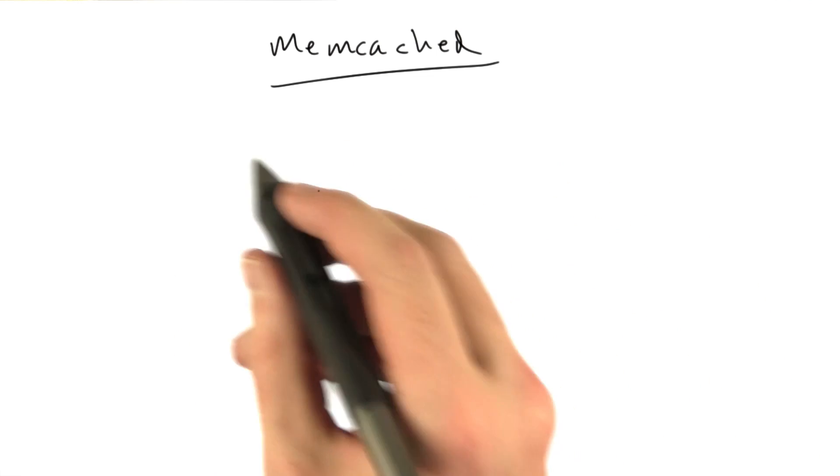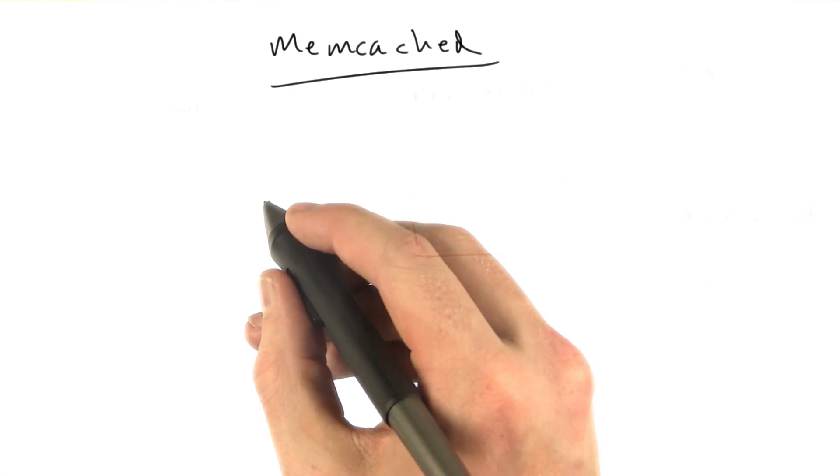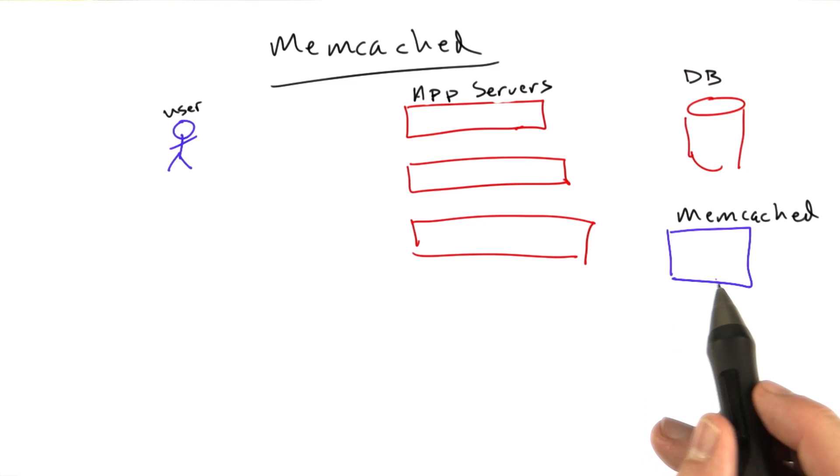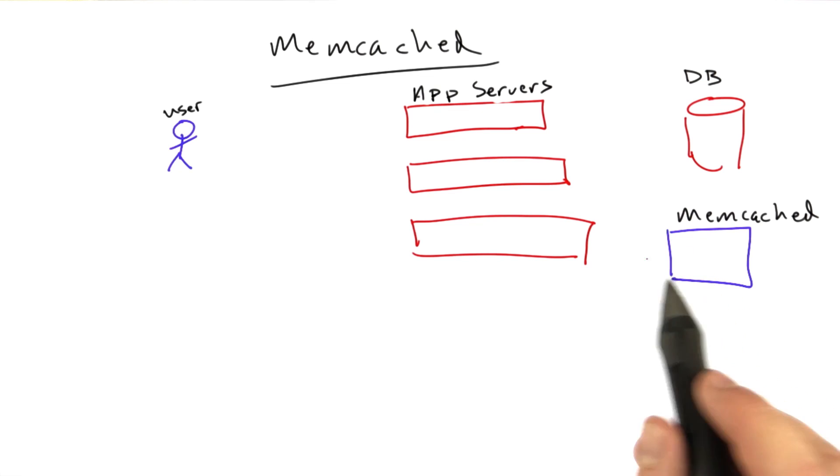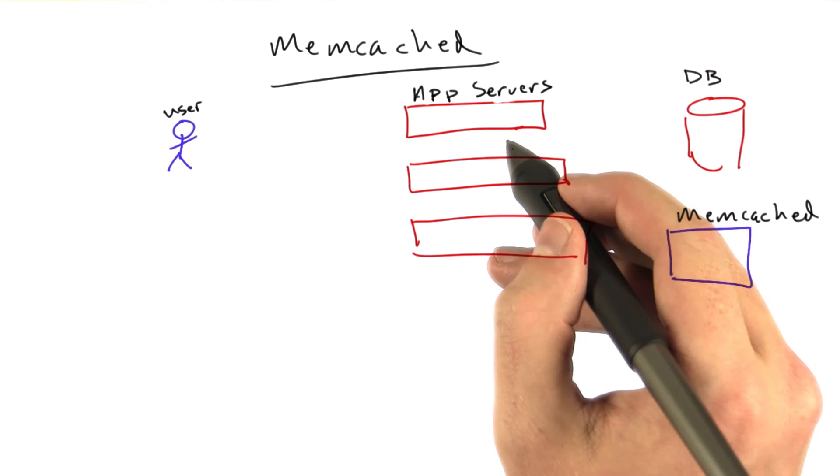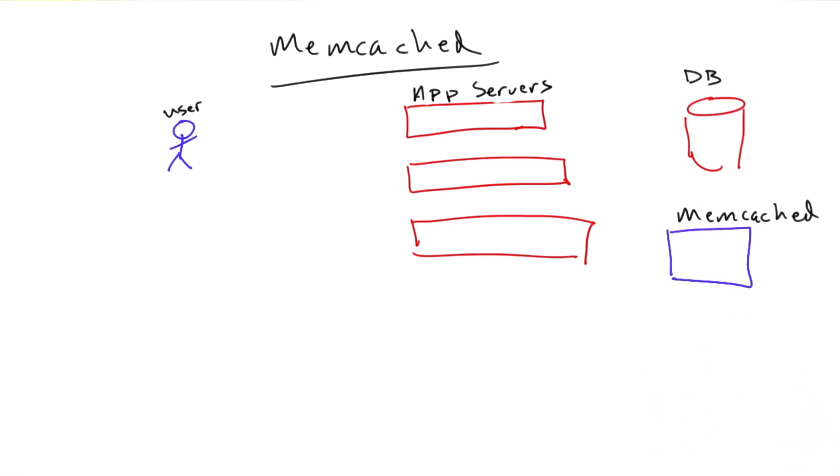Okay, so to draw a bigger version of that picture I did on the quiz, how Memcached fits in, it looks something like this. Memcached is a process. Often you run it on its own machine, but you can also run it on the machines with your app servers. And it's a very simple system.